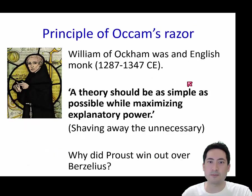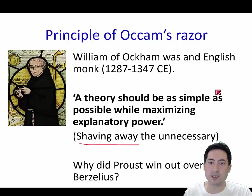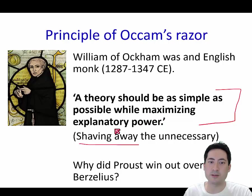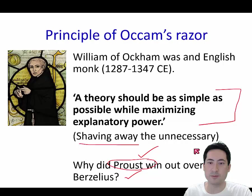So who wins? An English monk by the name of Ockham says that you should shave away the unnecessary. A theory should explain the most amount of examples and be as simple as possible. You choose the most simple theory with the most explaining power. That's why Proust has won out over Berzelius, and that's why chemistry has lots of fun exceptions — because we're working off theories that help us explain simply the most amount of reality as possible.